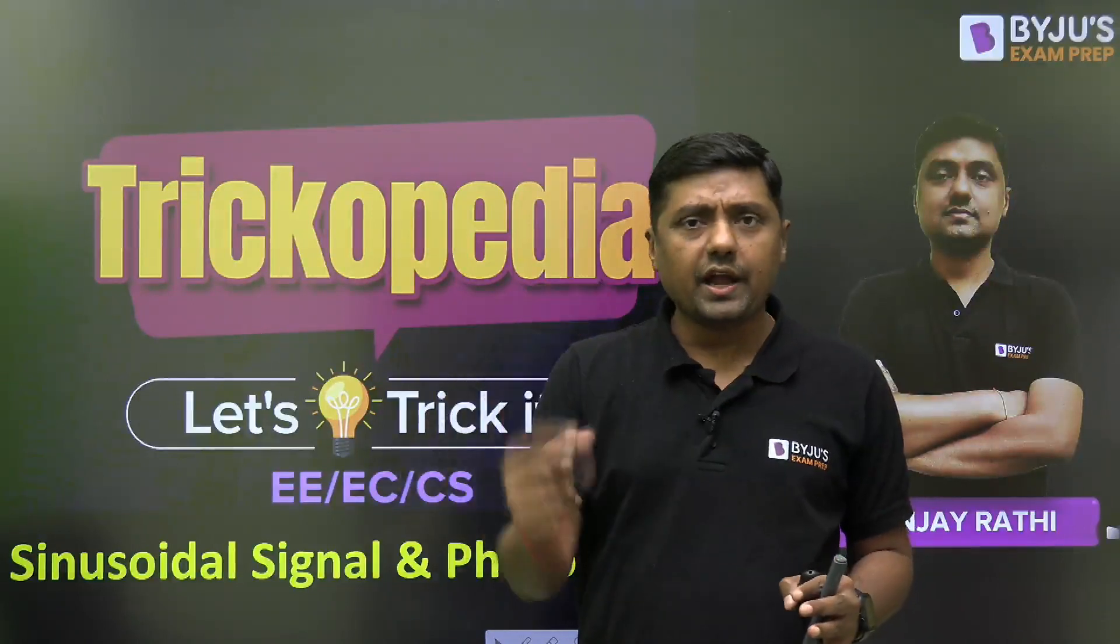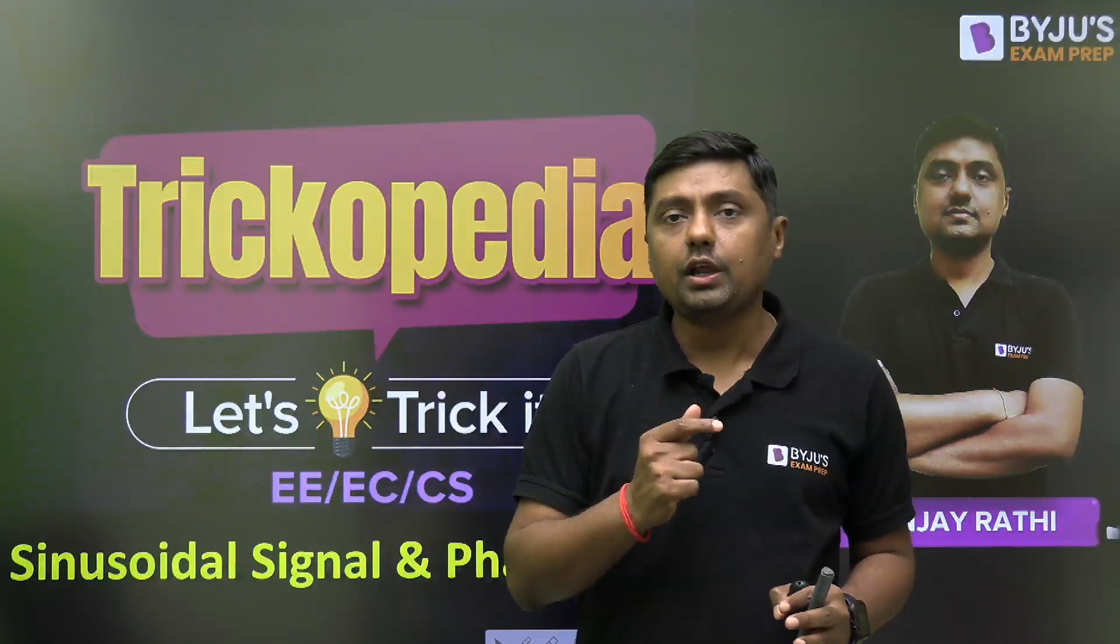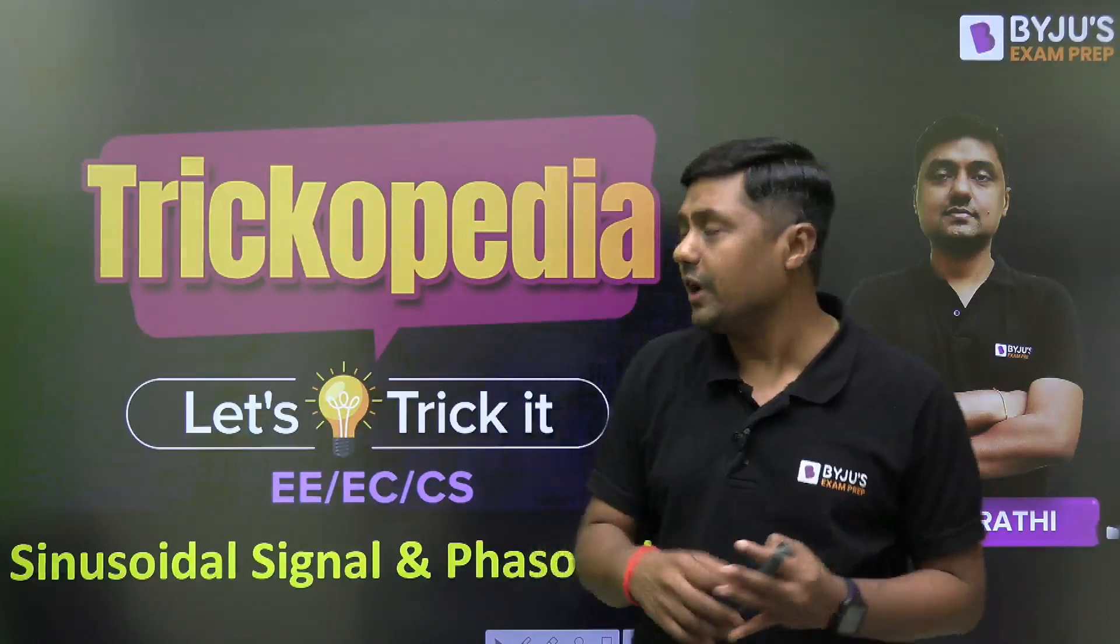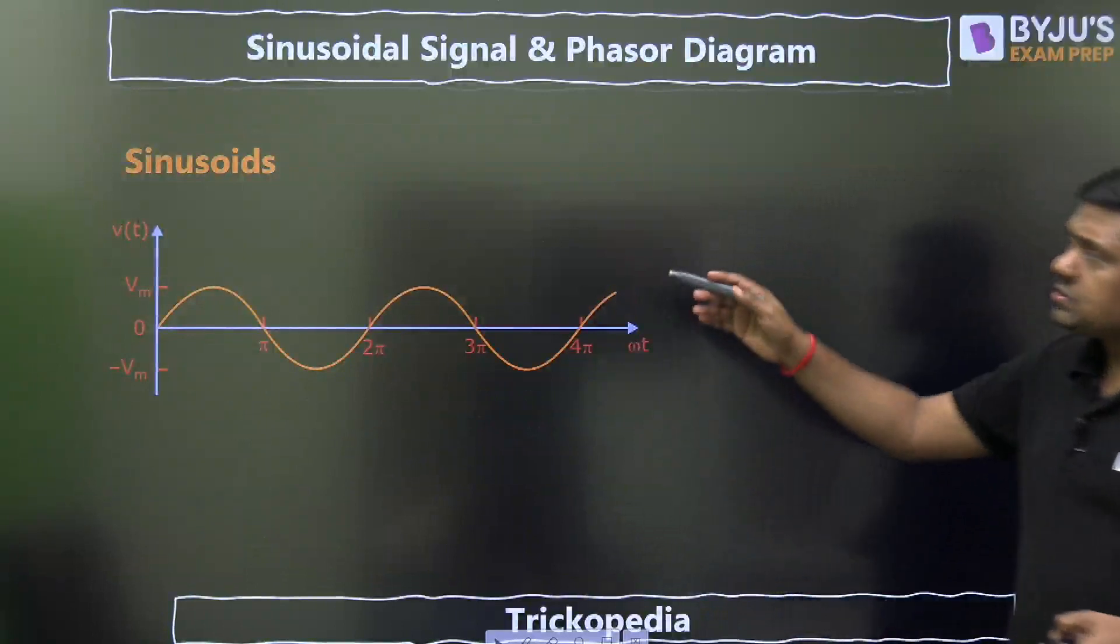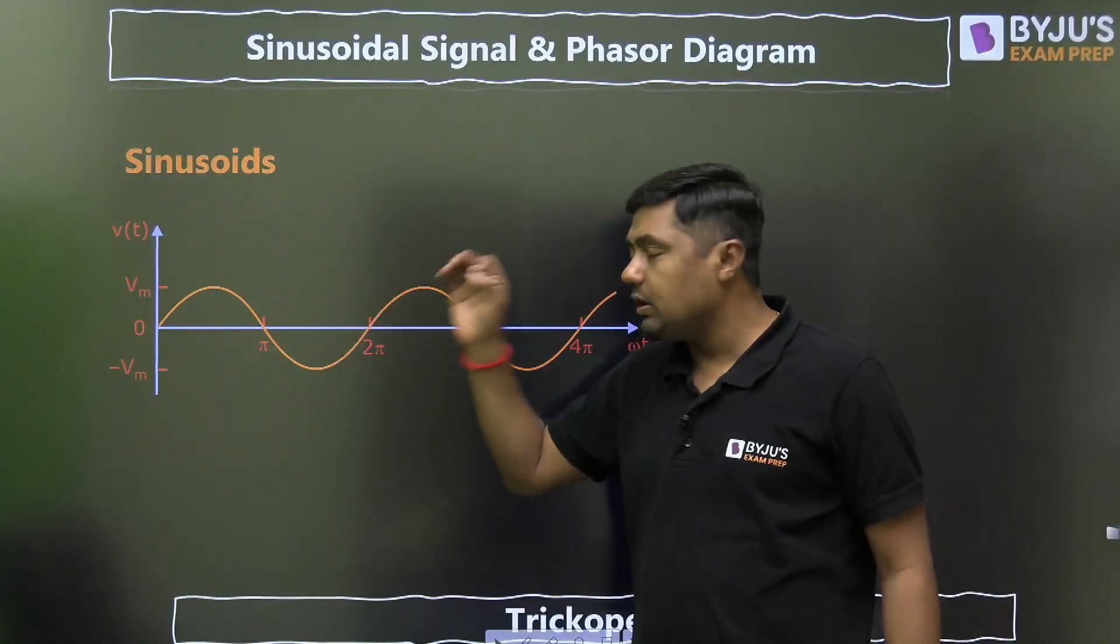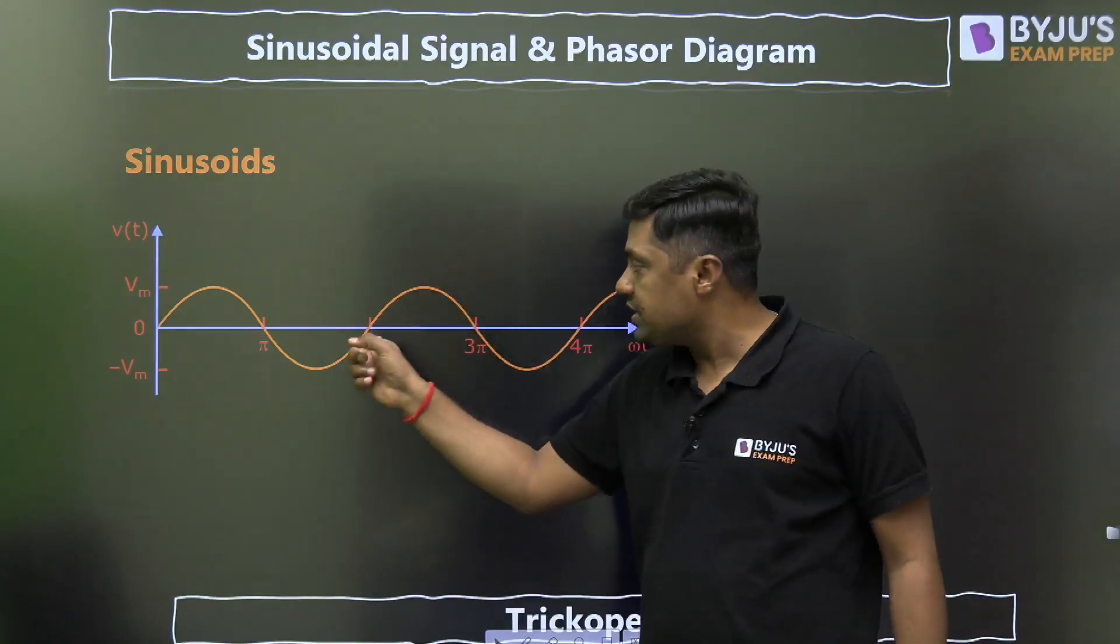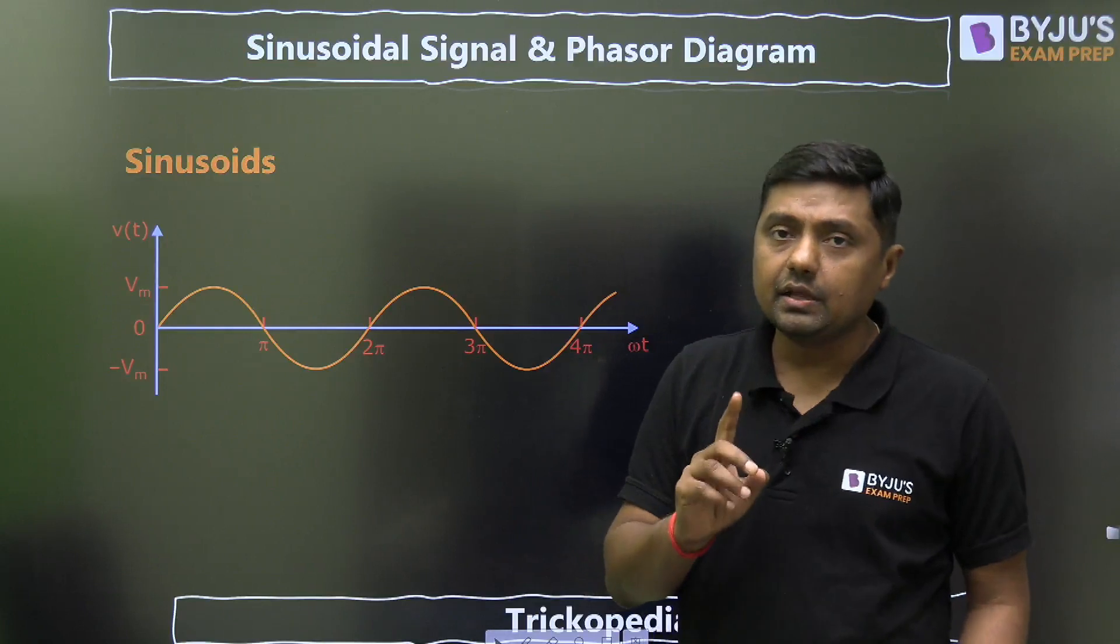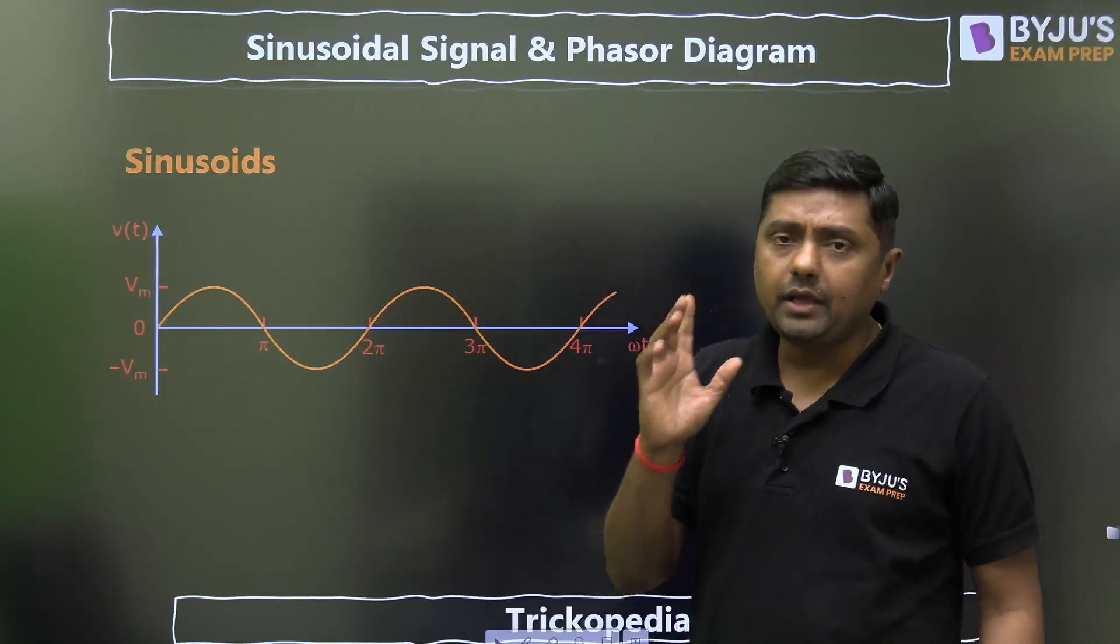You will get the idea how to solve the question quickly based on sinusoidal and phasor, and how to get the phasor. Now, this is sinusoid. As you know, it will complete one cycle in T time. It will change the phase by 2π. So what is the rate of change of phase? 2π by T. And f is equal to 1 by T.